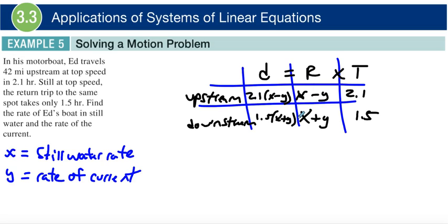Cool beans. So in that case, check this out. We actually have our two system of equations. We know that the distance was 42, right? That means 2.1 times x minus y must equal 42 miles, because Ed traveled 42 miles upstream. And consequently, even when he went back down, 1.5 times x plus y also equals 42.